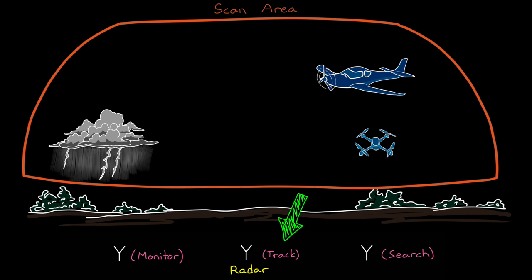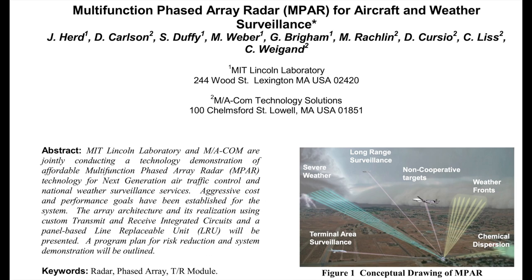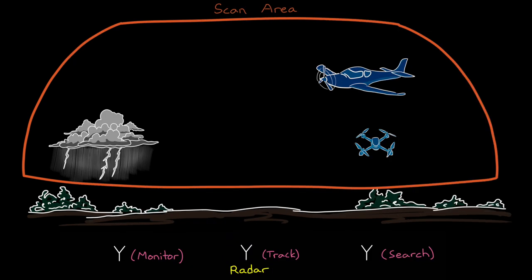Now, these functions of tracking, searching, and monitoring all might be done with separate radar systems. Or in some cases, they might be done from the same system, with a multi-function radar system. But in either case, digital beamforming can improve the way the radar accomplishes these functions.